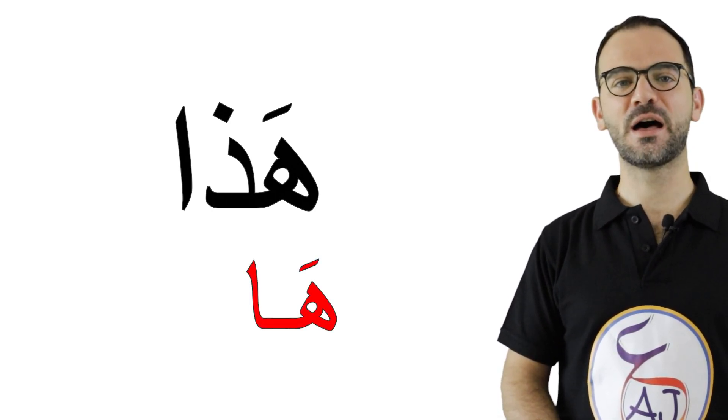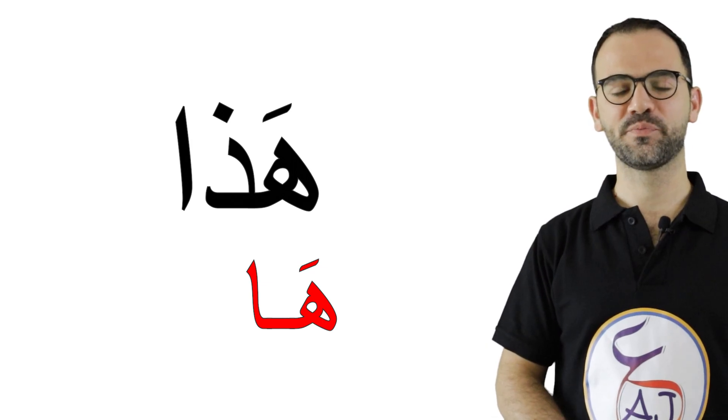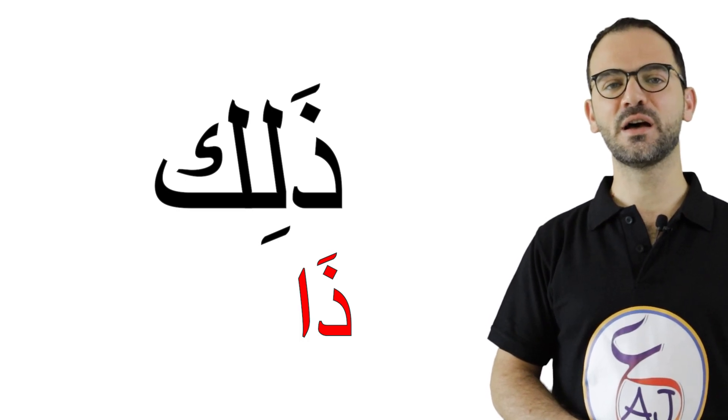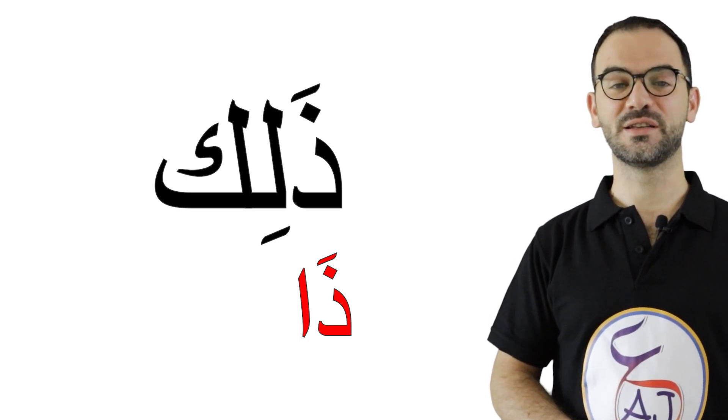If you noticed, the pronunciation of these words is different from the way we write them. For example, I say هذا but I don't write the long sound — هذا. Similarly, ذلك — I pronounce the 'ha' sound but I write it as ذلك. These three words are among the few irregular words in Arabic. Let's see how we pronounce them and how we write them.